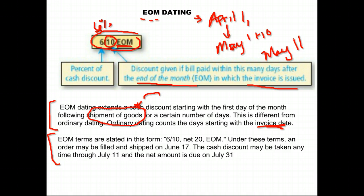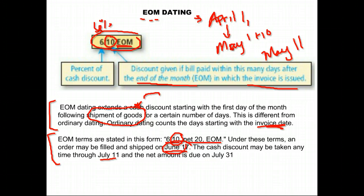For example, if the terms were 6/10 net 20 EOM, and an order is filled and shipped on June 17th, your cash discount can be taken through July 11th. End of month lets you go clear to the end of June into July, and you have 10 days after July 1st. The net amount is due on July 31st.